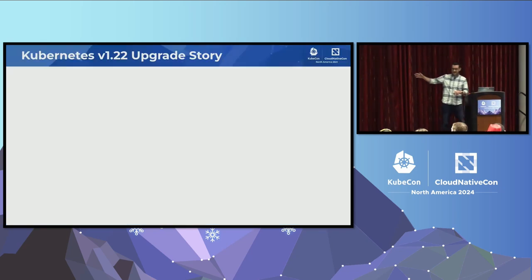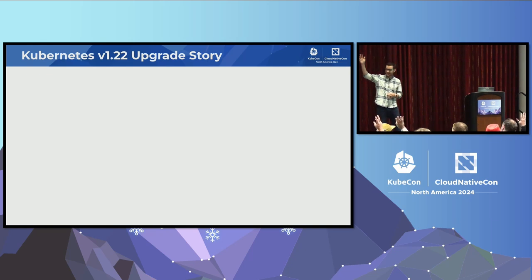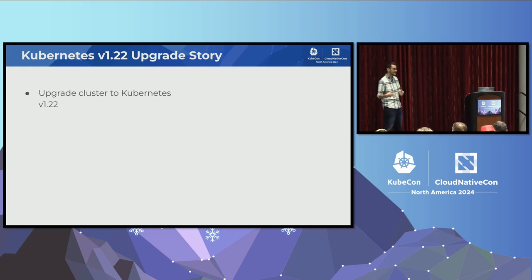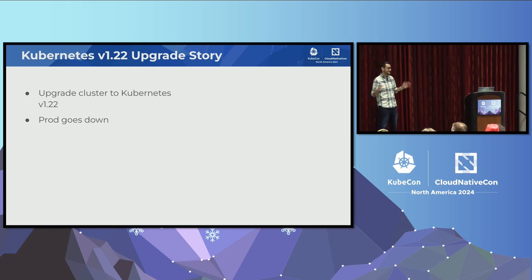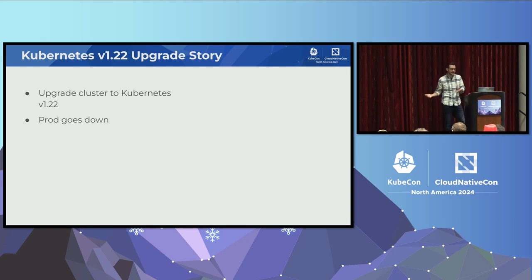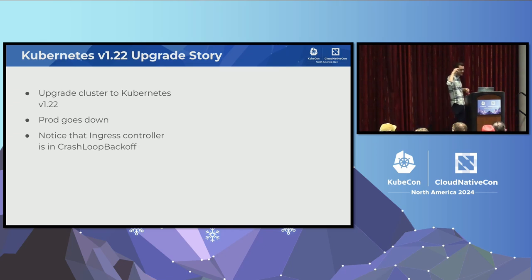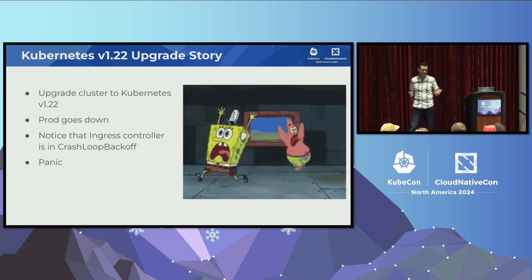We'll start with Ingress API. How many people were around for Kubernetes 1.22? If you were, this story may sound familiar. So you upgrade your Kubernetes cluster to 1.22, you're feeling good, you finally got your upgrade process down — and then your pager starts going off. Prod is down, your boss is calling, everything is not going right, right after you've upgraded. You can't roll back a Kubernetes upgrade. After a bunch of digging, you start noticing your Ingress controller is in a CrashLoopBackOff.